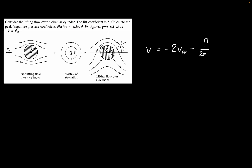We can start out by writing out the velocity terms for each of our two flow patterns. We have V equal to negative 2 times V infinity minus gamma divided by 2 pi R, where V infinity is our free stream velocity and gamma is the strength of the vortex. The non-lifting flow contributes the negative 2 V infinity term, whereas the vortex flow contributes the negative gamma divided by 2 pi R. You're essentially taking superposition and adding them together, combining the velocities at the surface of your cylinder.